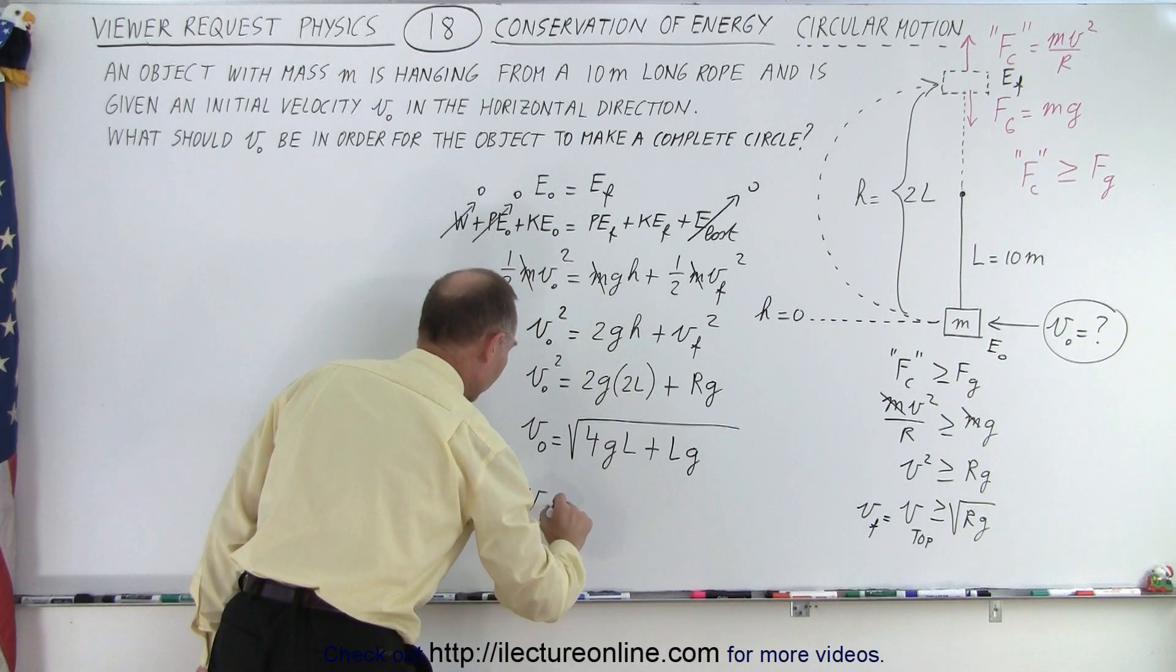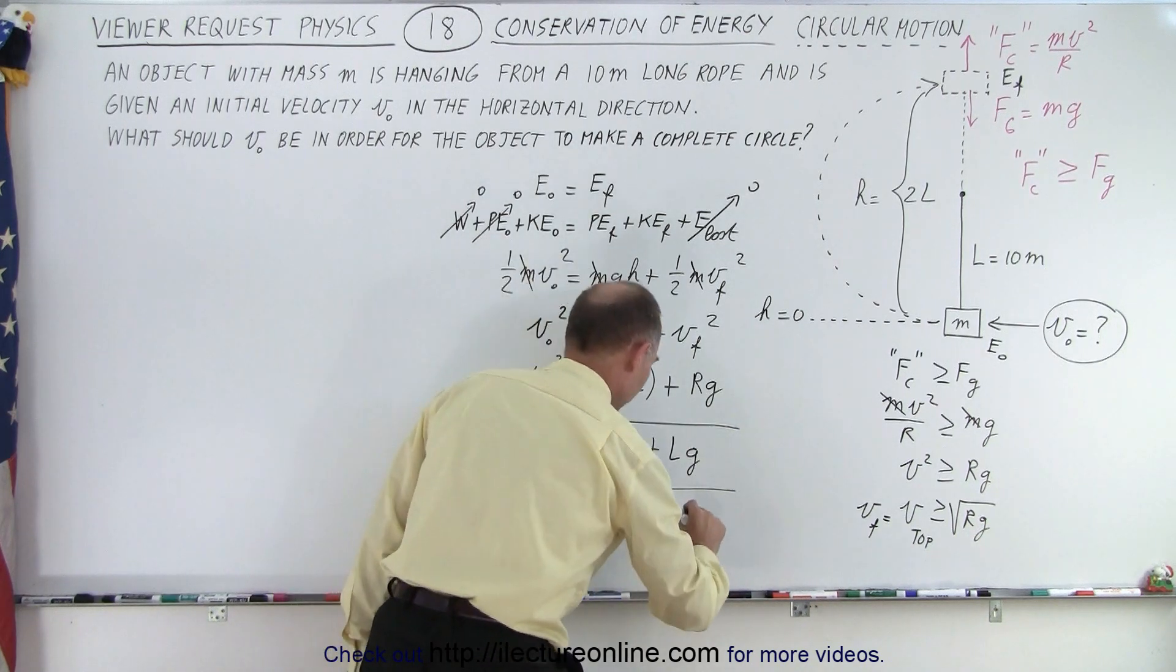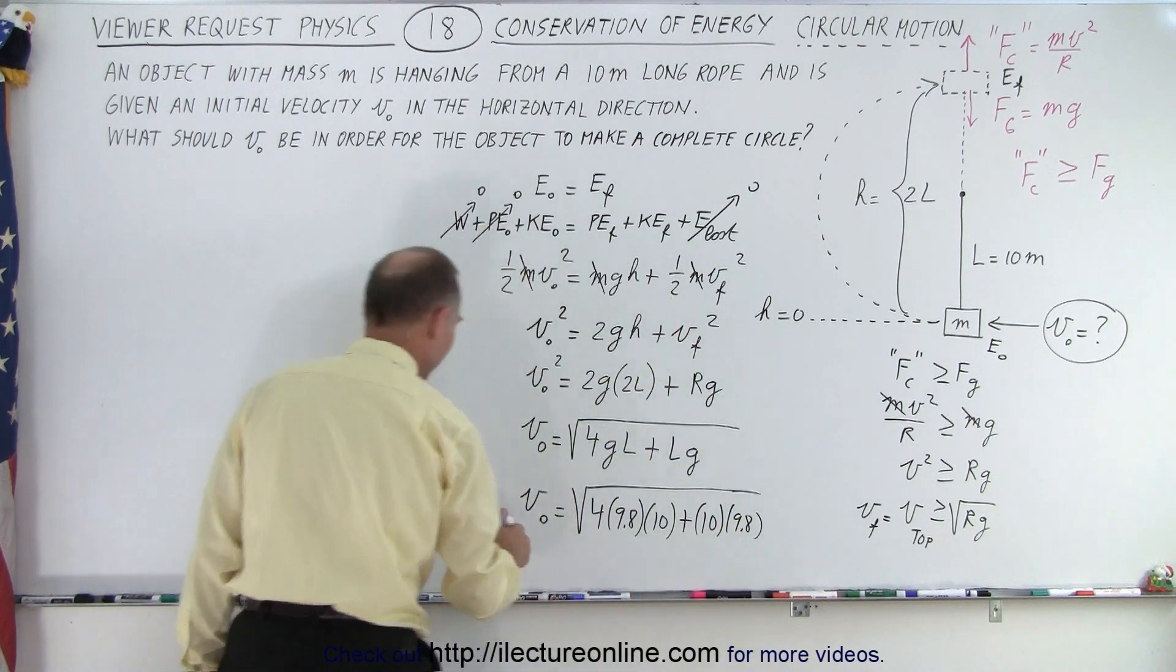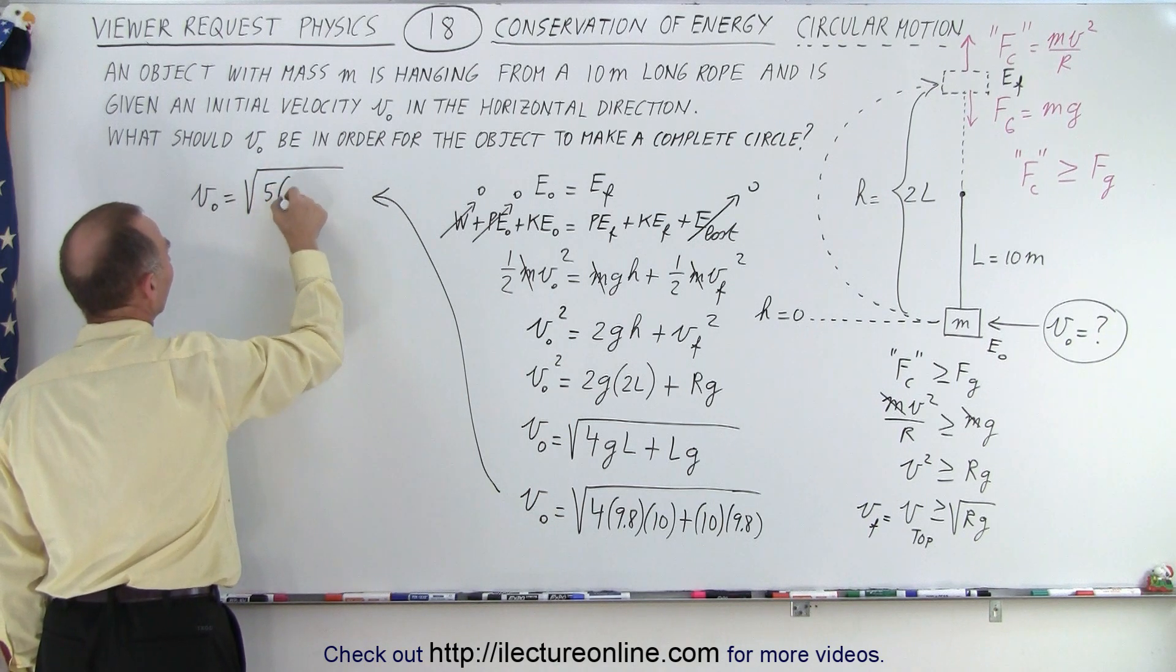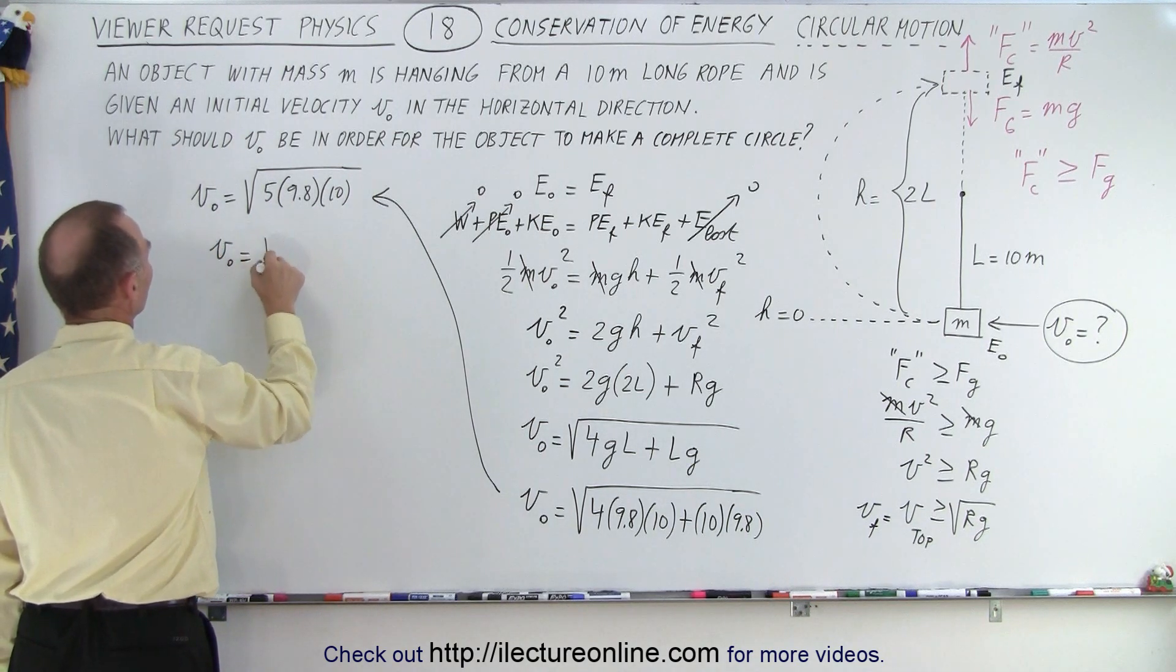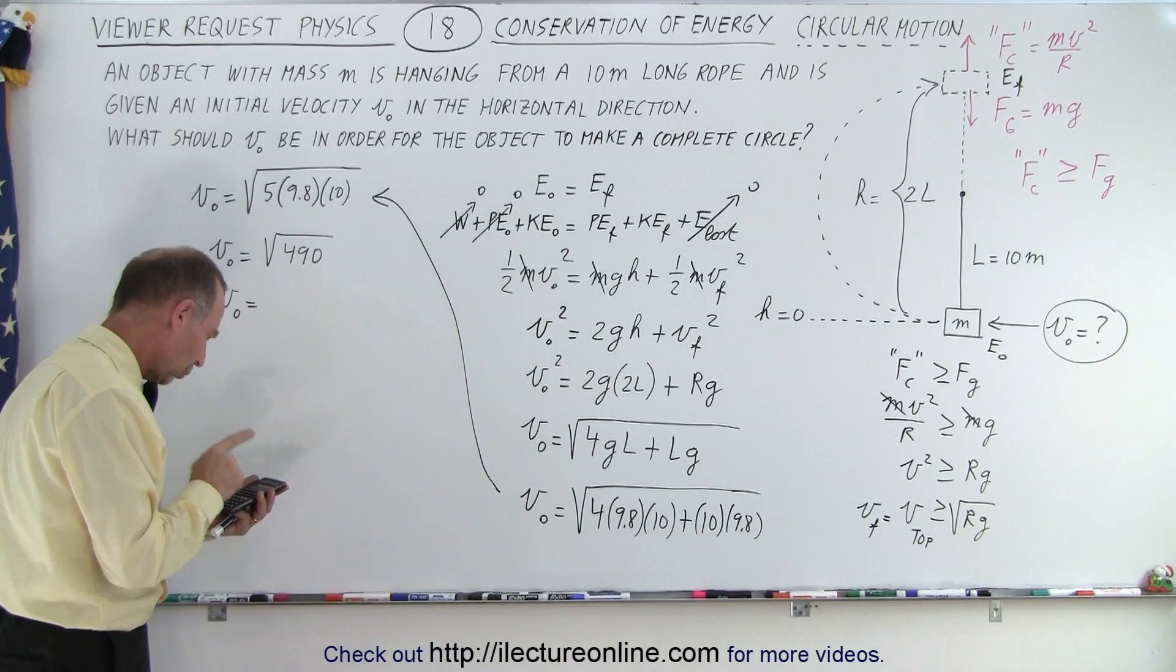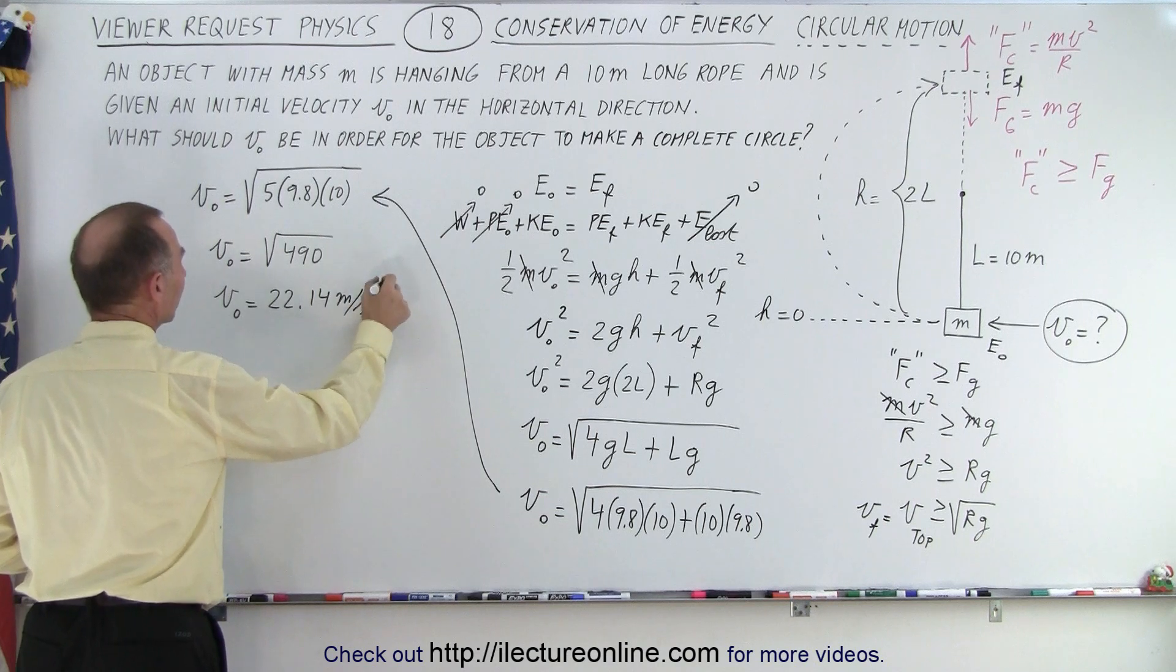And when we plug in numbers, V initial is equal to the square root of 4 times 9.8 times 10 plus 10 times G. Now it's 9.8. So let's go over here. So V initial is equal to the square root of 5 times 9.8 times 10 or 50 times 9.8. So V initial is equal to the square root of 490. So V initial is equal to the square root of 490, take the square root, 22.14 meters per second. 22.14 meters per second.